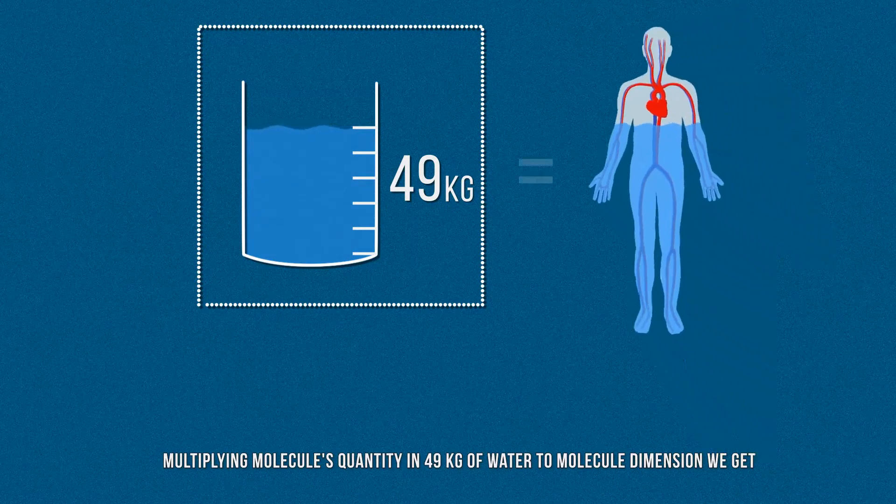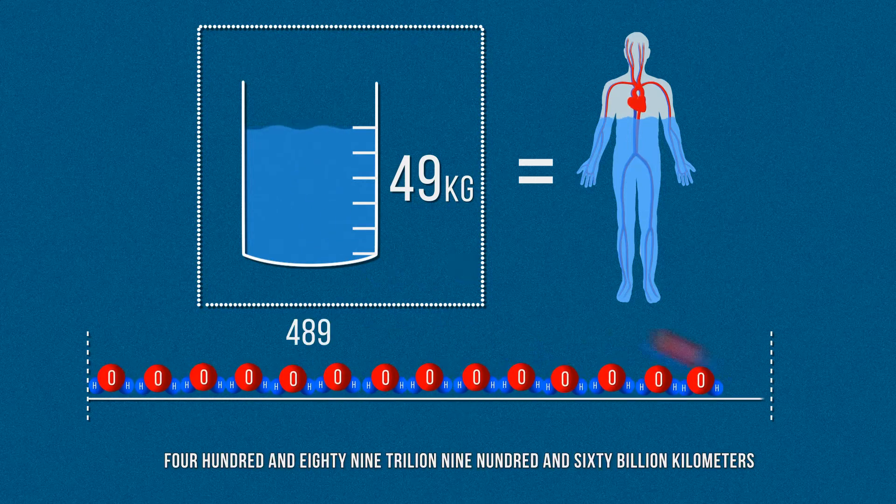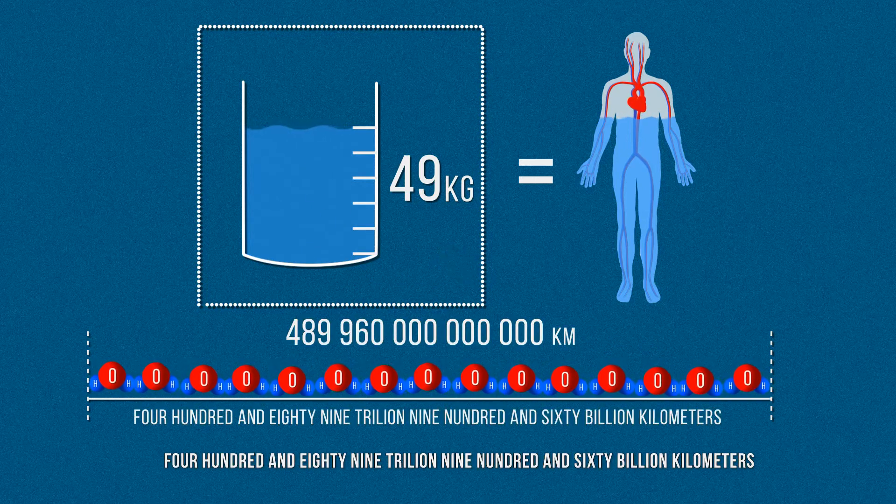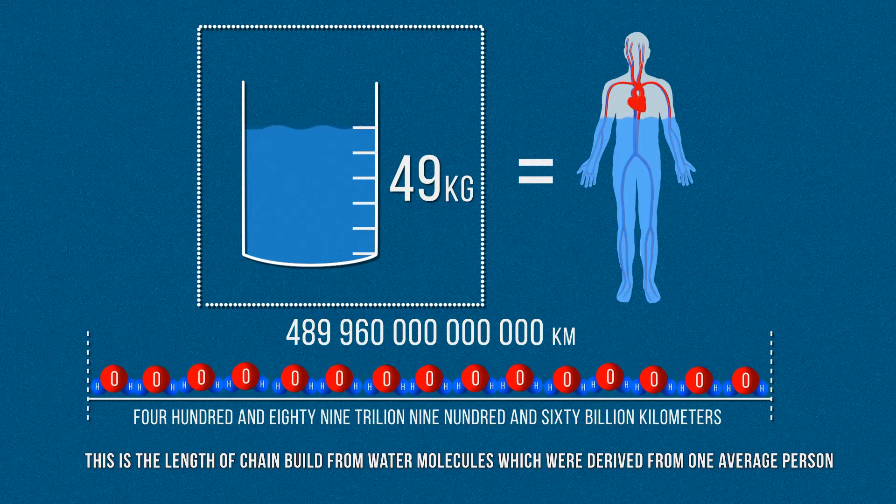Multiplying molecules quantity in 49 kg of water by molecule dimension, we get 489 trillion 960 billion kilometers. This is the length of chain built from water molecules which were derived from one average person.